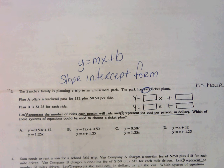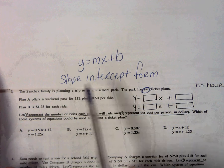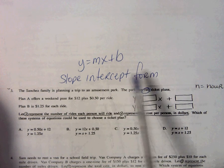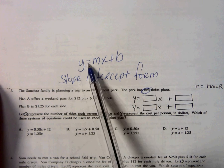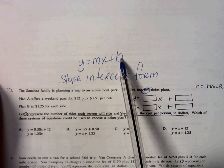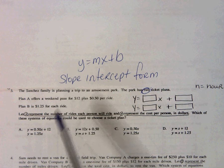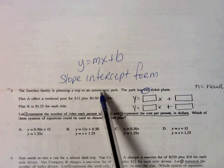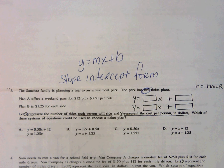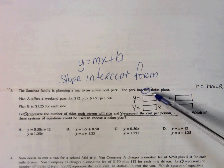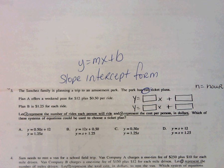Okay, we're starting with number three on classwork five. We are writing equations in slope-intercept form, y equals mx plus b, from a word problem. We have the Sanchez family and they're planning a trip to an amusement park. And the park has two ticket plans. Remember, we want two ticket plans that will give us two linear equations called a system.